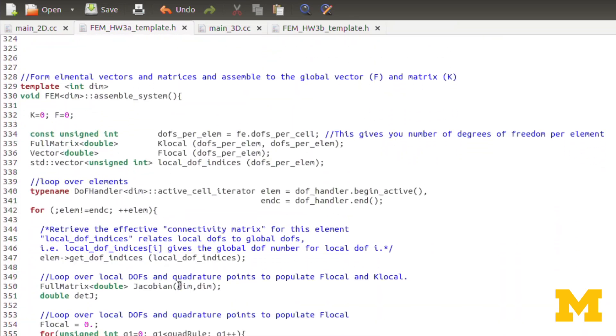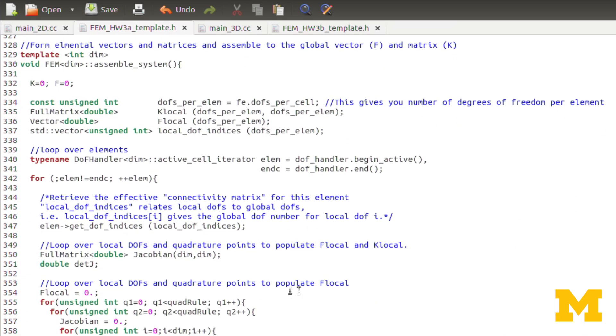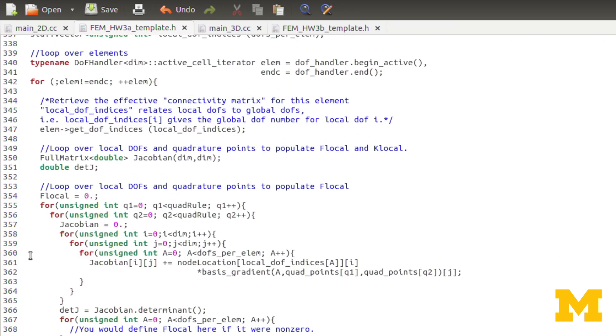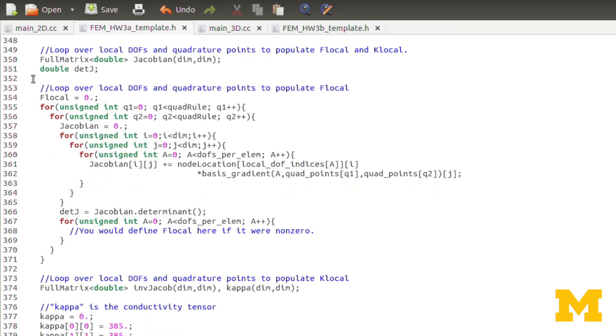But now we'll move into Assemble System. We have the same setup before, k equals 0, f equals 0. Same constants, data types. We set up our element loop the same way. Again, we update the local DOF indices vector with element, so that we can relate our local degree of freedom numbering with the global node number. But now I've introduced these other objects. We have a full matrix called Jacobian, and then a double det j, which will hold the determinant of the Jacobian.